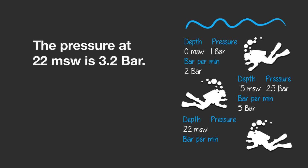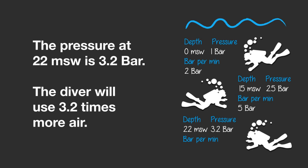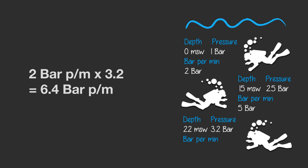Now we can take the diver to the second depth of 22 metres of seawater. The pressure at 22 metres of seawater is 3.2 bar — 22 divided by 10 plus 1. The diver will use 3.2 times more air per minute than at the surface. 2 bar multiplied by 3.2 equals 6.4, so the diver will use 6.4 bar per minute at 22 metres of seawater.